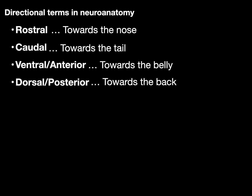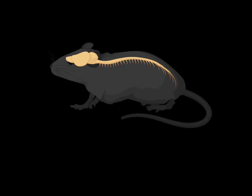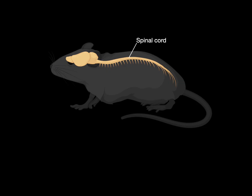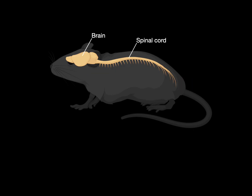To better understand how these terms are used in neuroanatomy, let's take a look at a cute little mouse. There's the brain. If we talk about parts of the mouse brain towards the nose, we say rostral, or towards the back, we say caudal. The same for spinal cord — rostral towards the nose, caudal towards the tail. This part is ventral because it's closer to the belly, and this is dorsal because it's on the back.